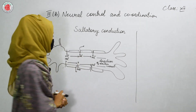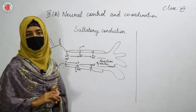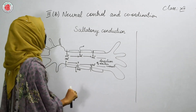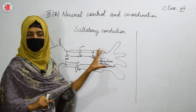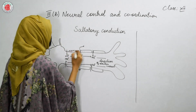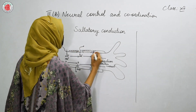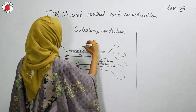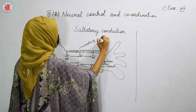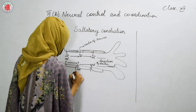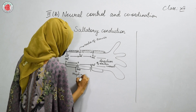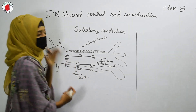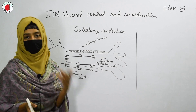In saltatory conduction, we can take an example of a myelinated neuron. A myelinated neuron is a nerve cell that shows the myelin sheath over the axon. This sheath is present over the membrane of the axon and shows some nodes in between them called nodes of Ranvier. In saltatory conduction, the sodium ions present in the interstitial fluid move in to depolarize the cell.